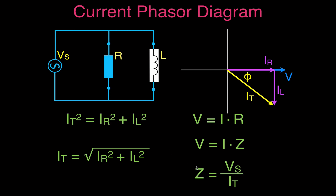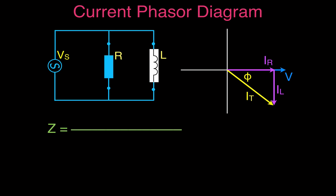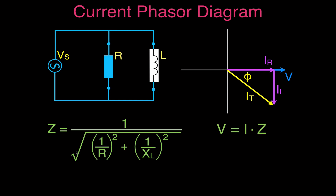Alternatively, we can calculate impedance first using: Z = 1 / √(1/R² + 1/X_L²), then use V = IZ rearranged as I = V_source / Z to get the total current. Doing it both ways and checking that you get the same answer for both impedance and total current gives you confidence that your values are correct.